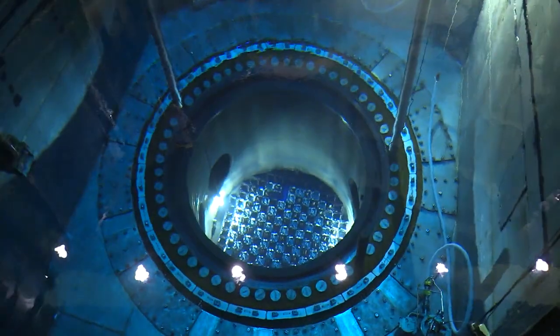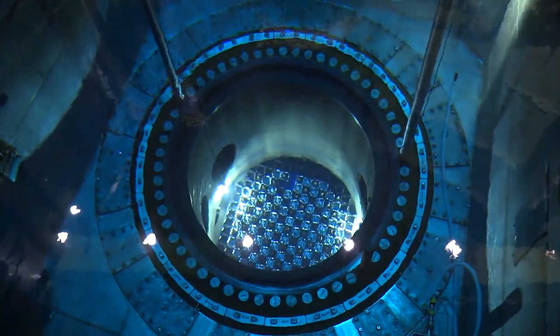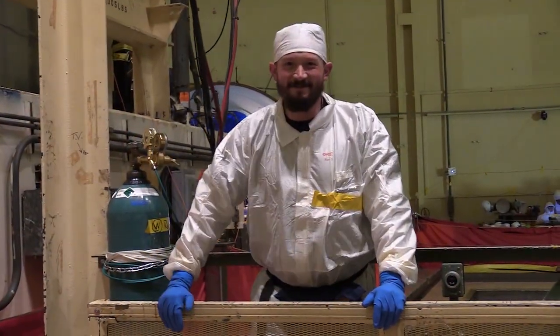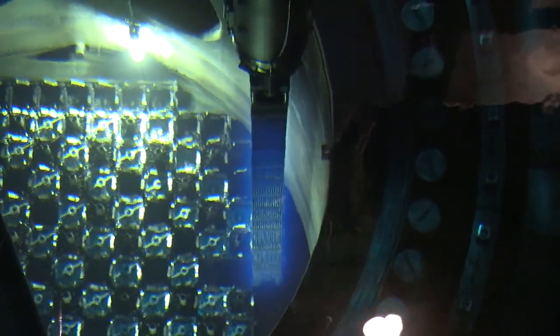Initially, all 193 fuel assemblies are offloaded from the reactor core by a movable platform called the manipulator crane. Each fuel assembly is transferred to the spent fuel pool in the fuel storage building via an underwater transfer system.